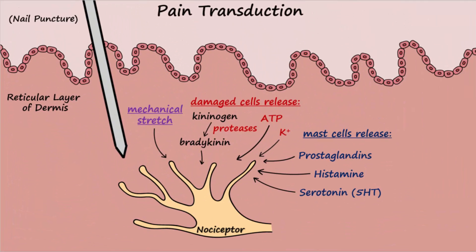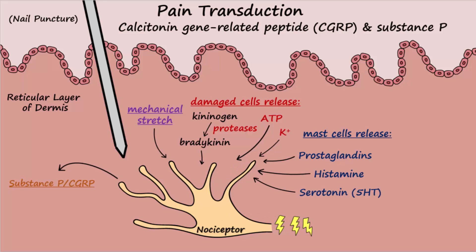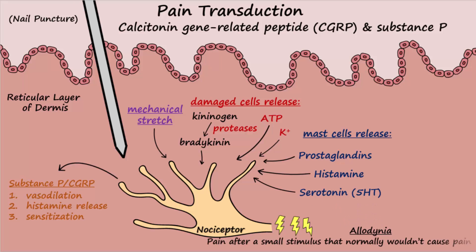Other contributors to transduction in nociceptors include calcitonin gene-related peptide (CGRP) and substance P. Electrical activity of the nociceptors causes them to release corresponding amounts of substance P and CGRP, which increases the inflammatory response and causes vasodilation, release of histamine from mast cells, and increased sensitization of neighboring nociceptors. An example of this sensitization is the allodynia one experiences on the skin with just light touch after a sunburn.